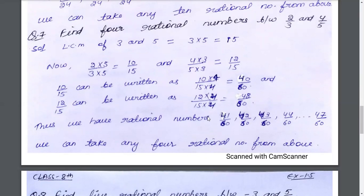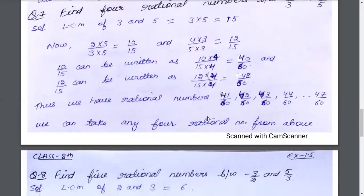We need to take 4 rational numbers, so we can do this. We have 10 by 15 and 12 by 15. We can find the rational numbers: 10 by 15 and 11 by 15, but we will only have 2 rational numbers here. So we increase the denominator further: multiplying by 4 gives denominator 60. Between 40 by 60 and 48 by 60, the 4 rational numbers are 41 by 60, 42 by 60, 43 by 60.